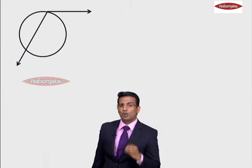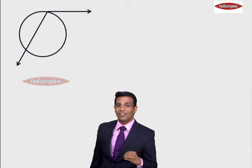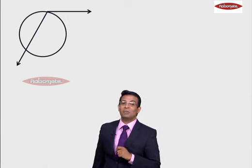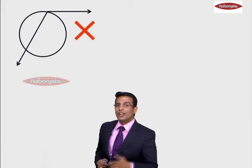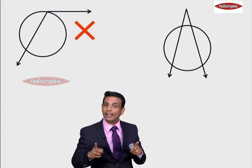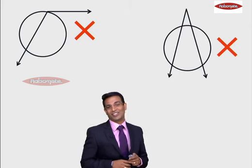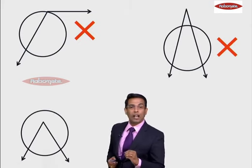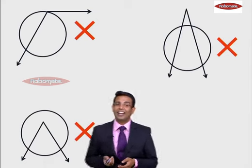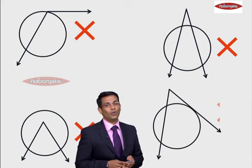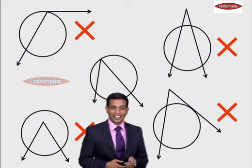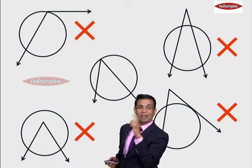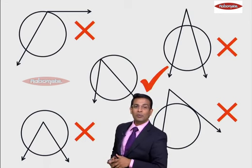Let's understand whether you can identify an inscribed angle. In the first figure, is the angle shown an inscribed angle? No, because the second condition is not satisfied — both arms are not secant; one arm is a secant but the other one is not. In the second figure, is this an inscribed angle? No, because the first condition is not satisfied — the vertex is not on the circle. The third one? No, both conditions are not satisfied. The fourth one? No, one is a secant and the other is not, and the vertex is not on the circle. The fifth one? Yes! This is an inscribed angle because the vertex is on the circle and both arms are secants.